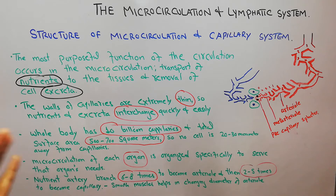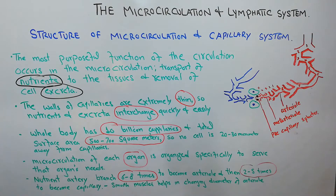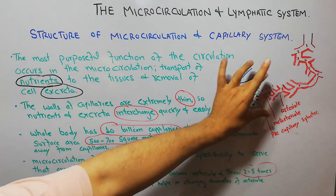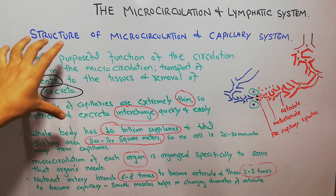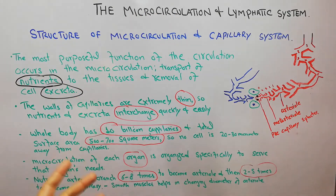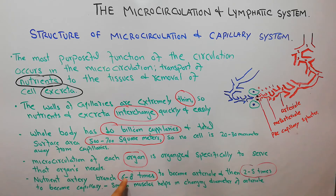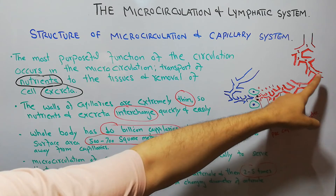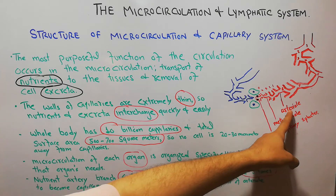The nutrient artery branches around six to eight times to become an arteriole. This larger nutrient artery arises from the aorta — it may be the hepatic artery or the renal artery going to any organ. It has to divide around six to eight times: here it branches one, two, three, four, five, six, seven, and eight times to reach the level of an arteriole.